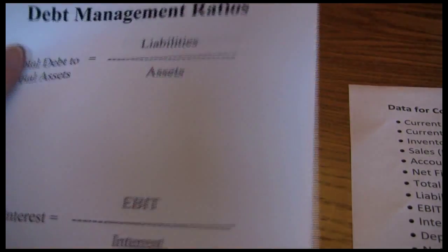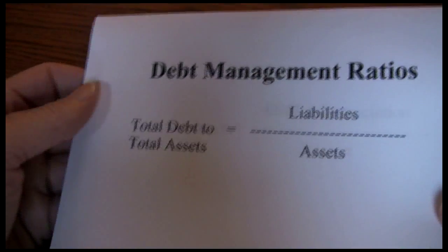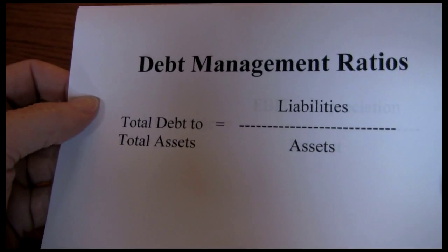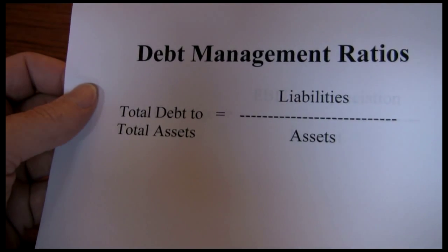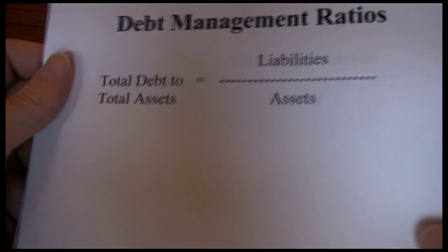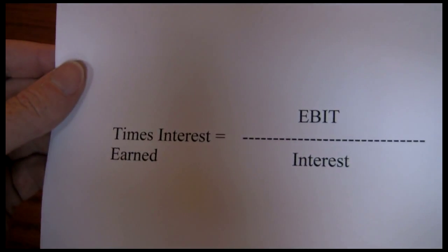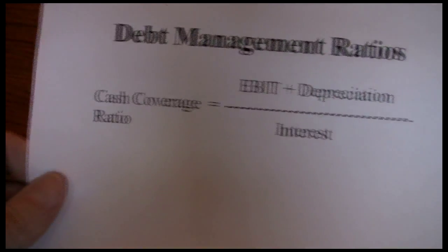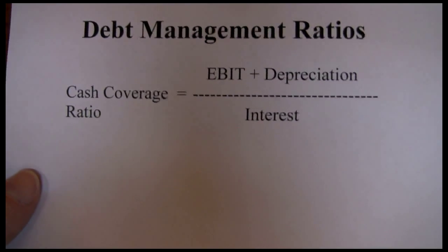Next up, we want to look at debt management ratios. There are three debt management ratios that we want to look at here. First, total debt to total assets. Next, our times interest earned. And then lastly, our cash coverage ratio.